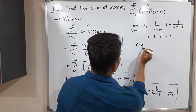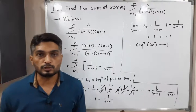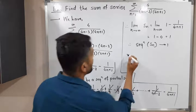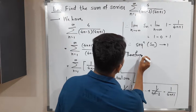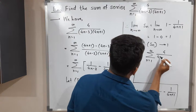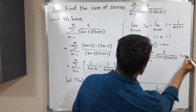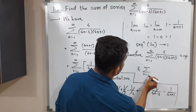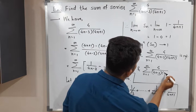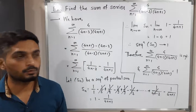Therefore, the sequence of partial sums sn is convergent and converges to 1. Since the sequence of partial sums is convergent, the series is also convergent and converges to the same point. Therefore, the given series — summation n from 1 to infinity of 4 upon (4n minus 3)(4n plus 1) — is convergent, and its sum converges to 1.